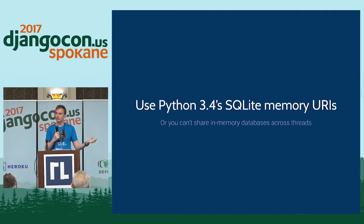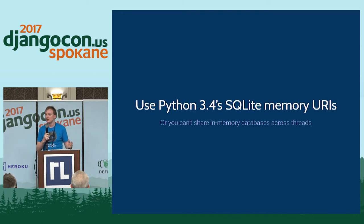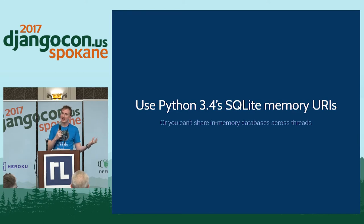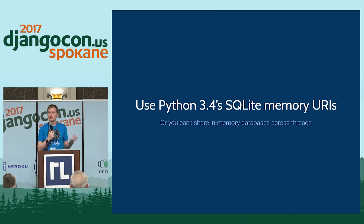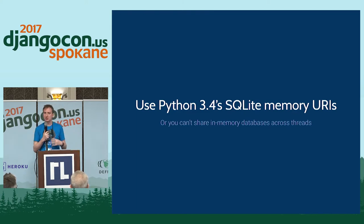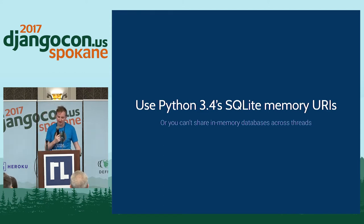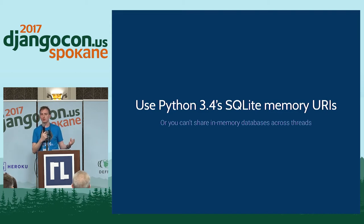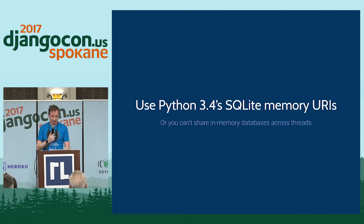It also uses a thing in Python 3.4 which is new: SQLite's database memory URIs. SQLite used to have colon-memory-colon, which is just an in-memory database, but it was thread-local and every connection was brand new. SQLite has since added shared databases across all threads with caching. You need URIs to do this, and Python 3.4 is the first version that supports SQLite URIs.